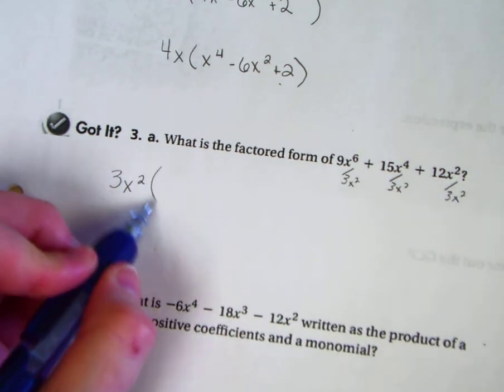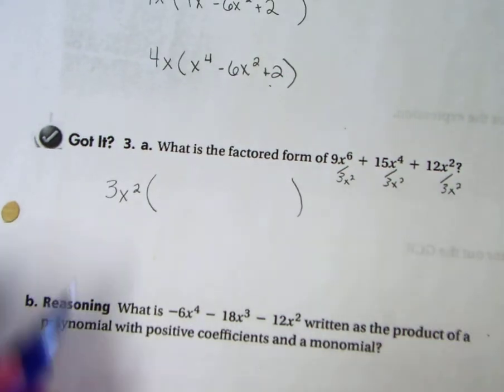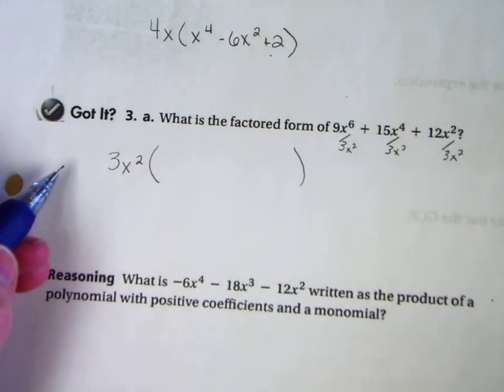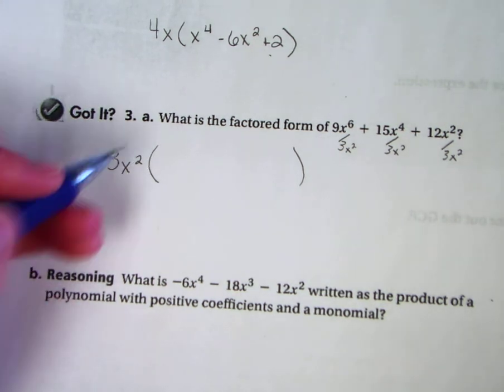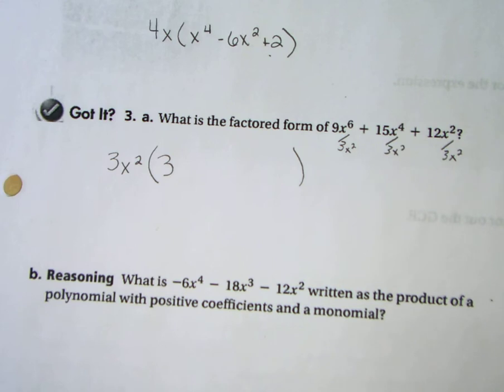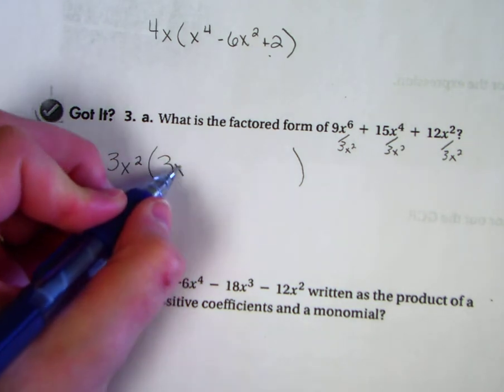Now let's do some division and put parentheses on. 9x^6 divided by 3x^2. Well, 9 divided by 3 is 3. x^6 over x^2 is x^4.